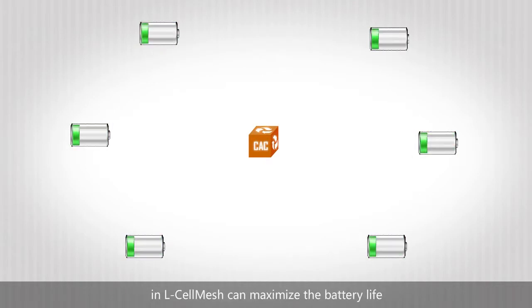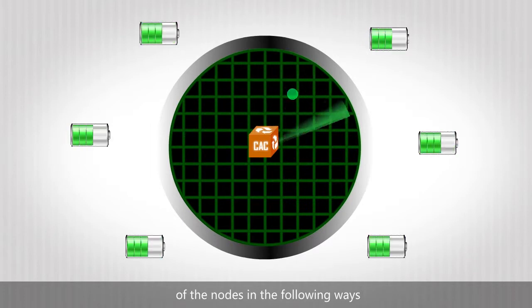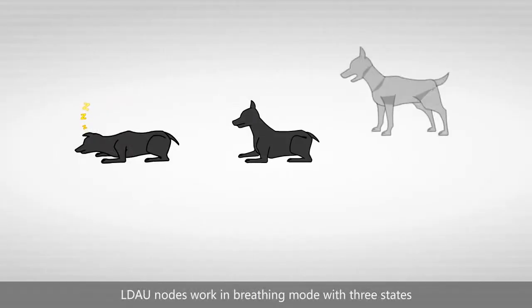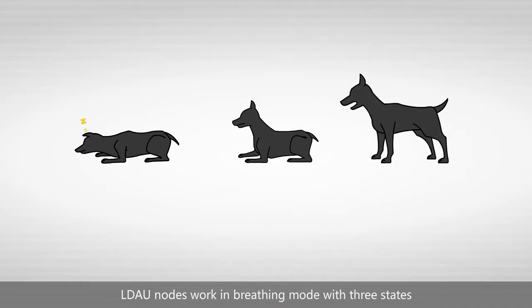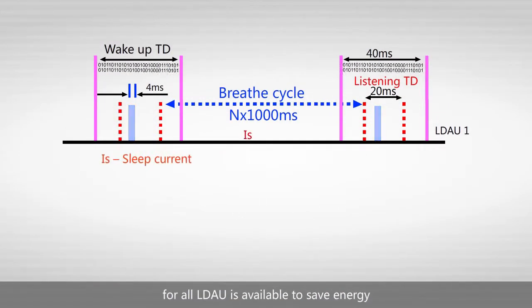Advanced power management technologies used in L-Cell Mesh can maximize the battery life of the nodes in the following ways. LDAU nodes work in breathing mode with three states: sleep, listening and active. A duty cycle of less than 1% for all LDAU is available to save energy.